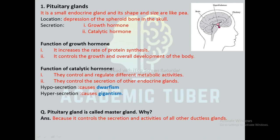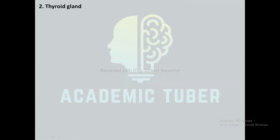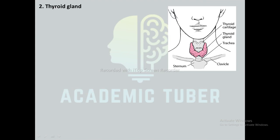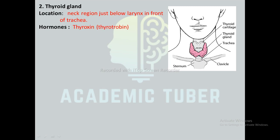Thyroid gland: it is located in the neck region just below the larynx, in front of the trachea. The hormone secreted by the thyroid gland is thyroxine, also known as thyrotrophine. The function of this hormone is to increase cellular respiration, metabolism, and growth of the body.